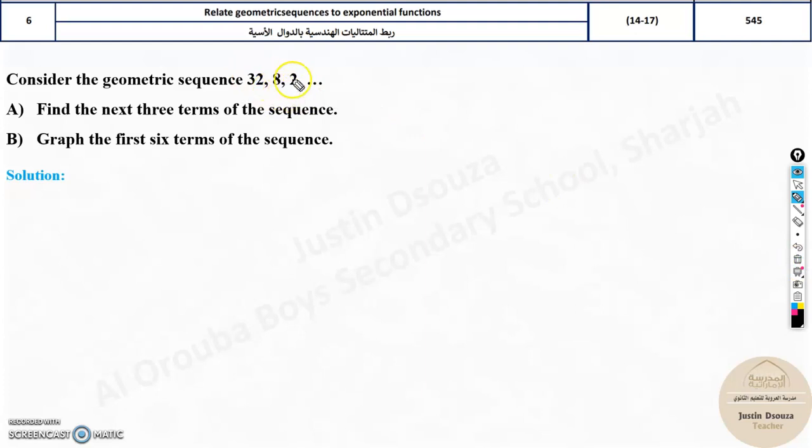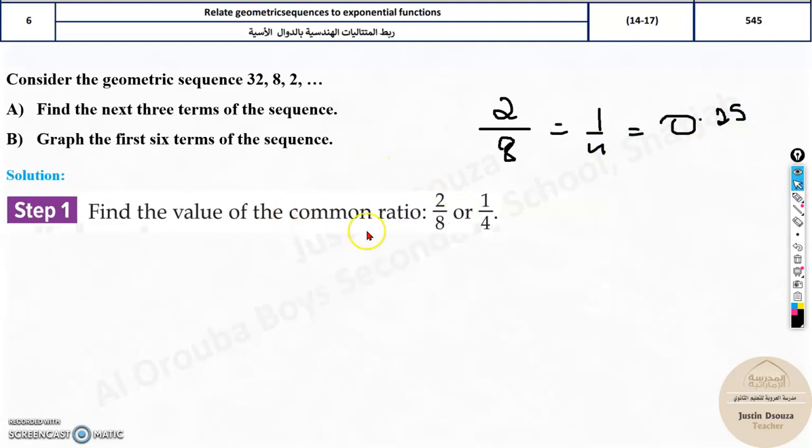Now just look for simple numbers. Over here, 2 and 8 are simple. So I'll do 2 divided by 8. That is 1 fourth or quarter or 0.25. So this is the ratio. That is our step one to find the common ratio.